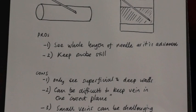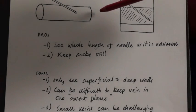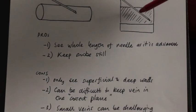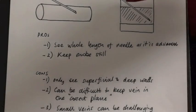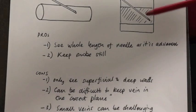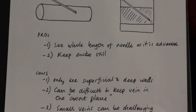So what are the pros and cons of cannulation in longitudinal section? First of all, with the probe directly over the blood vessel and the long axis of the probe in the long axis of the blood vessel, we can see on the ultrasound the whole length of the needle as it advances through the superficial wall of the vein and into the lumen. We can also keep the probe absolutely still, with the only movement being the needle going into the blood vessel. The disadvantages are that you only see the superficial and deep walls of the blood vessel, and it can sometimes be very difficult to keep the probe directly over and parallel to the blood vessel in the same plane. For these reasons, small veins can be very challenging using this method.